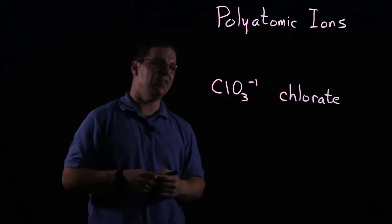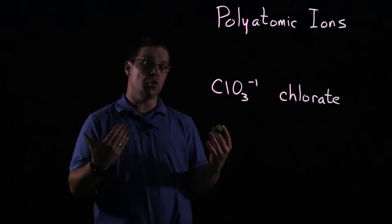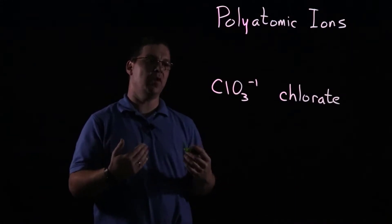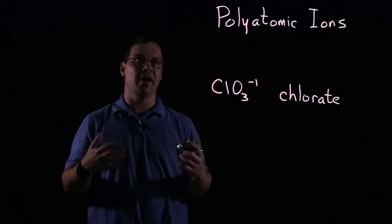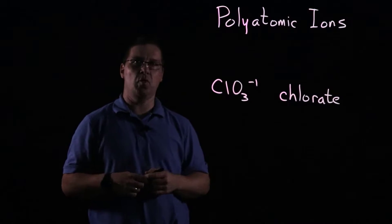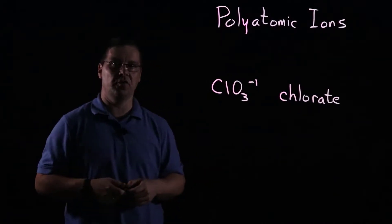So what we want to take a look at is how do those changes correspond to one another, and how can we apply those changes to a wide variety of ions. So if we take, for example, a common polyatomic ion from the first set, chlorate.